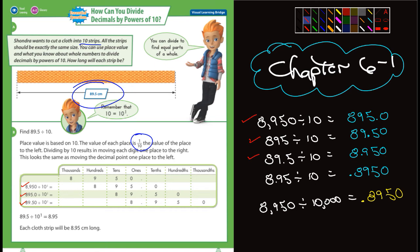Last one. So now we have 8.950 being divided by 10. What do you think happens? The decimal still moves over one place. And so what do we end up with? 0.8950. And I hope that makes sense to you guys. Because guess what we're doing in Chapter 6? A lot of that.